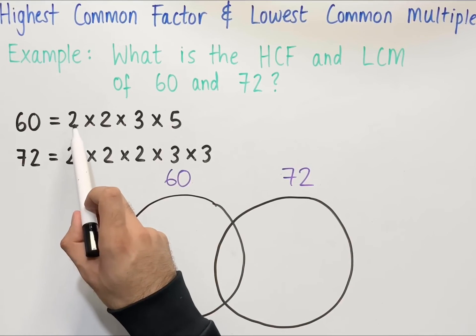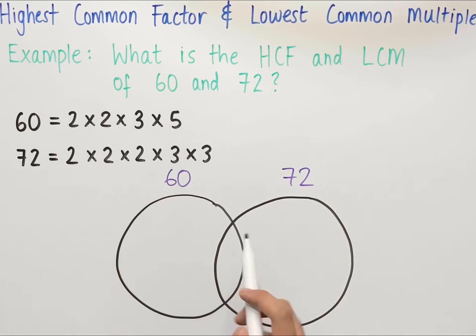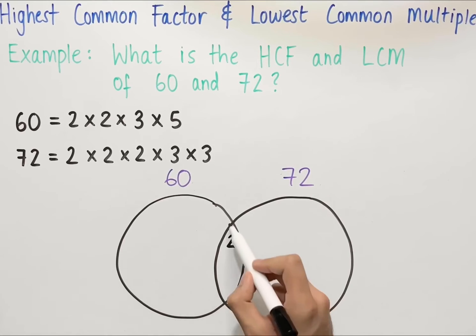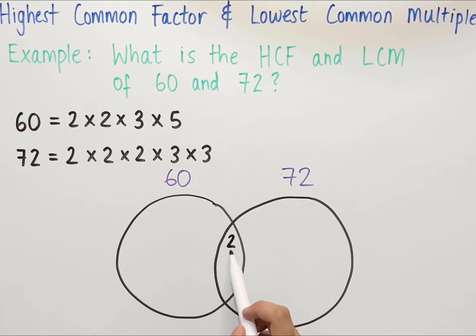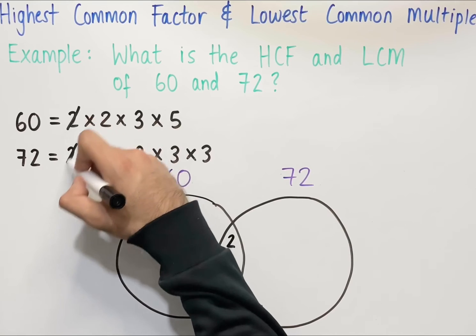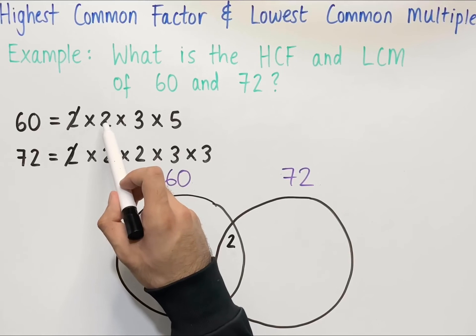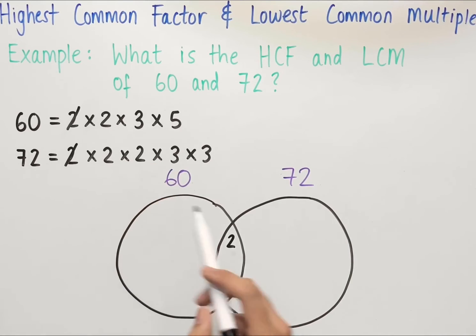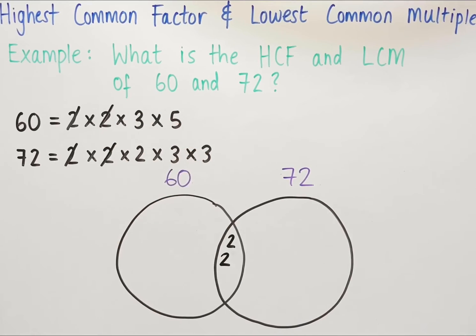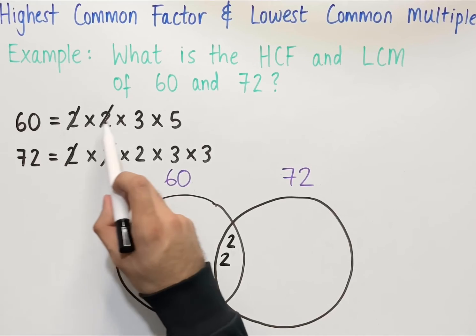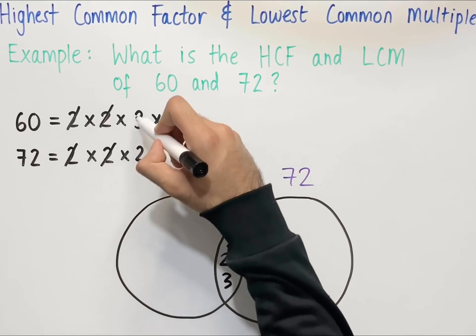We look at the product of prime factors for each number and see which numbers are common, placing those in the middle of the Venn diagram. Starting with 2 — there's a 2 common in both 60 and 72 — so we place it in the middle and cross out the matching 2s in both numbers. The next 2 is also common in both, so we place that in the middle and cross out the pair. Then there's a 3 common in both, so we place a 3 in the middle and cross out the pair.